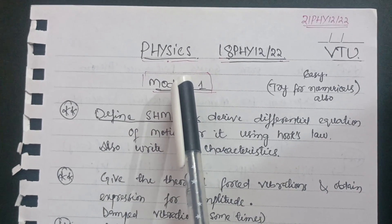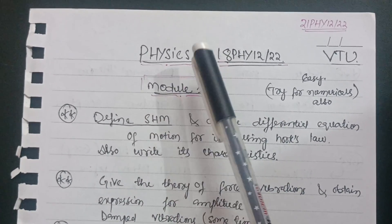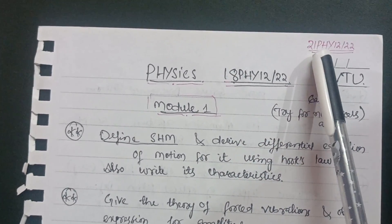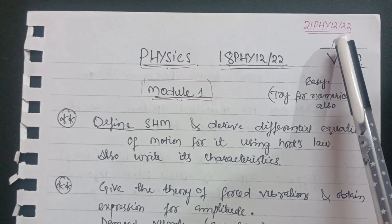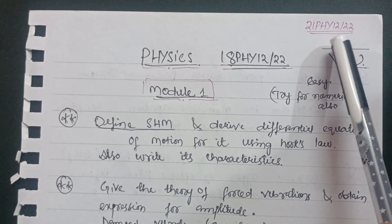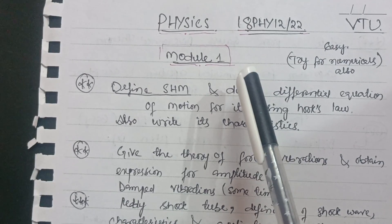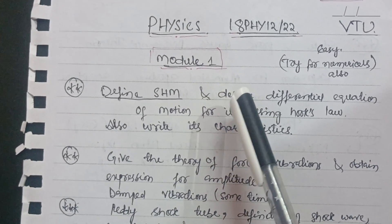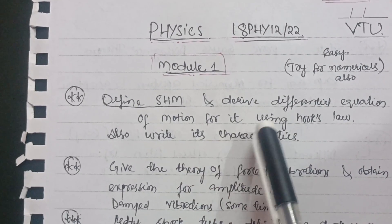Welcome back friends. Today I am covering engineering physics, which is applicable for both the 18 scheme and 21 scheme. The subject codes are 18PHY12/22 and 21PHY12/22. It is offered in the first semester as the first or second subject, and also in the second semester as the second subject. In this video, I will discuss the most important questions so you can easily conquer the subject and score well. Even backlog students can easily pass with the content I will discuss.